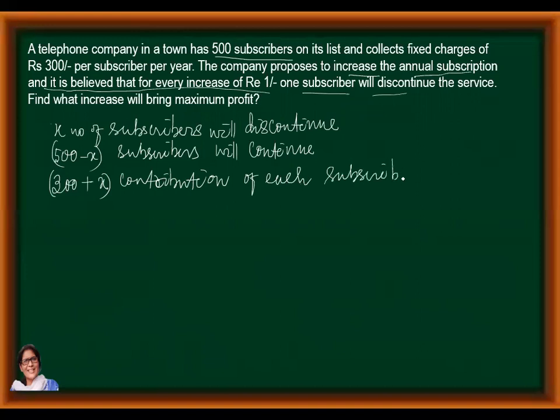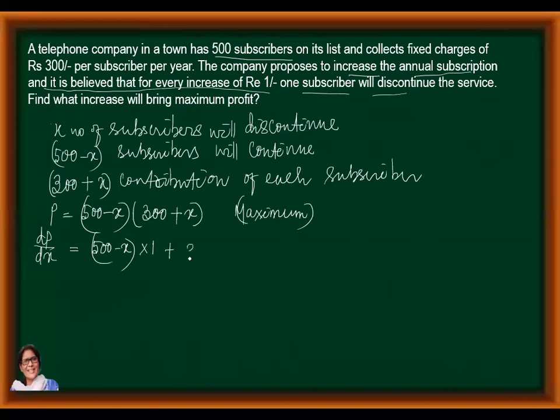Then what will be the profit? Profit will be total subscribers multiplied by each contribution. So P equals (500 minus X) times (300 plus X). This will be maximum. Then its derivative is 0. So let us multiply this or you can also use product rule. dP/dx is equal to 0. So (500 minus X) constant here is 1 plus (300 plus X) constant is minus 1. This is equal to 0 because profit is maximum.